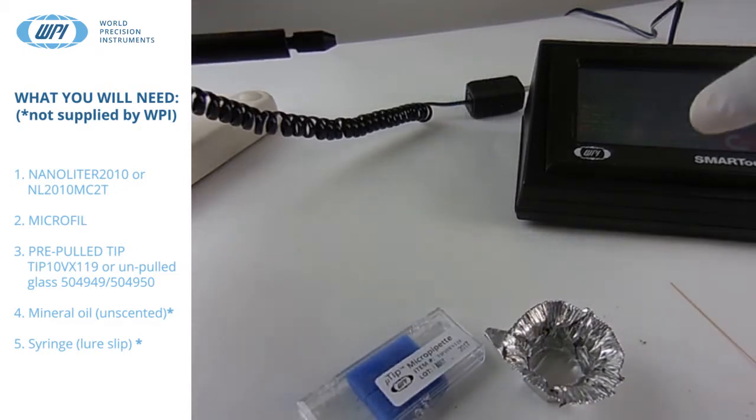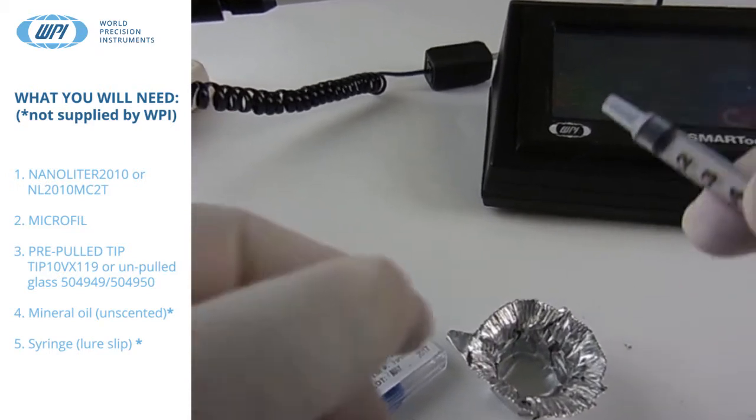The first thing we need to do is fill the syringe with mineral oil about halfway. Slip on the microfill to the pre-filled syringe with mineral oil.